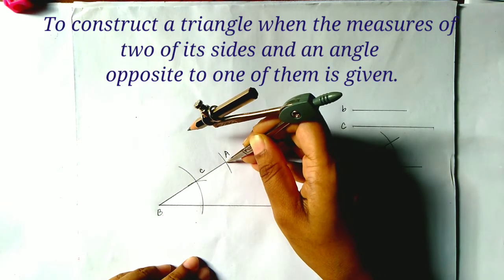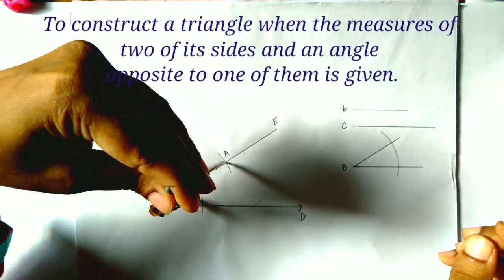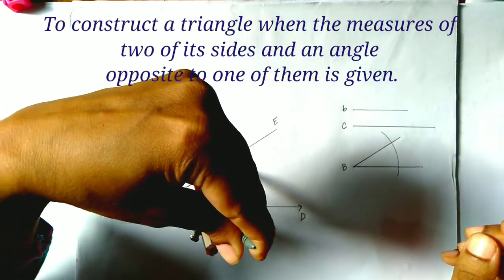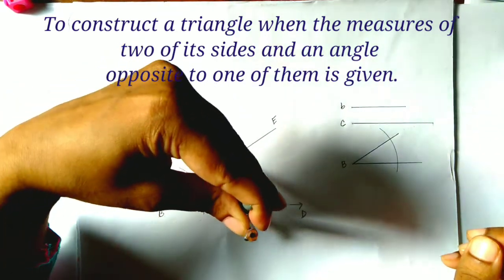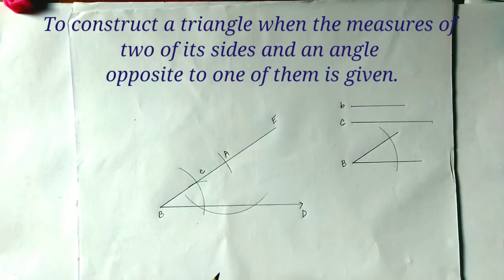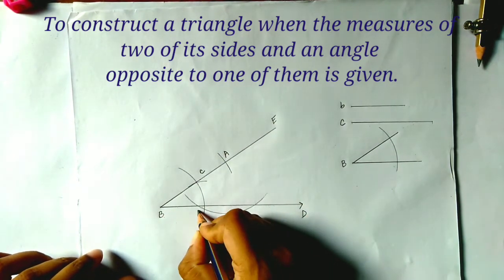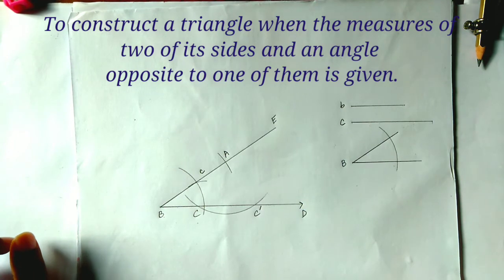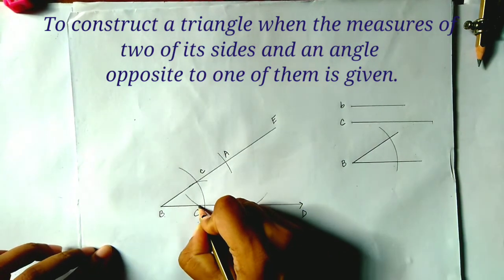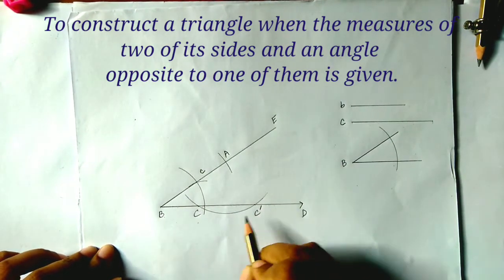At point A, we draw an arc with radius equal to side B. The arc intersects ray BD at points C and C prime.